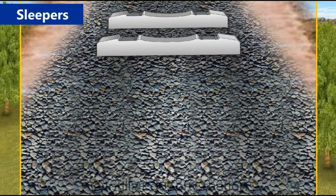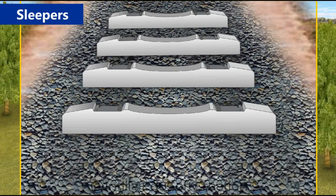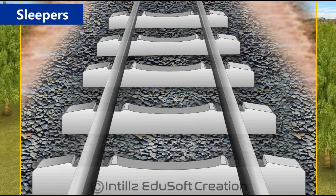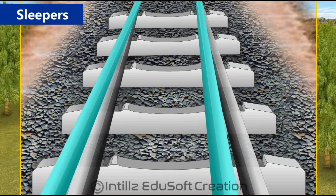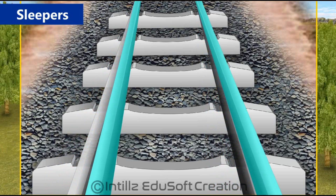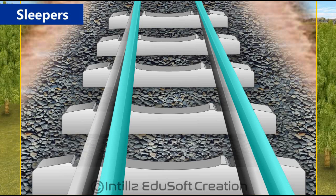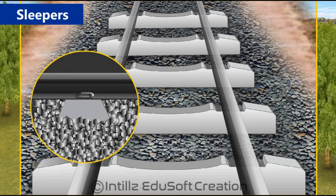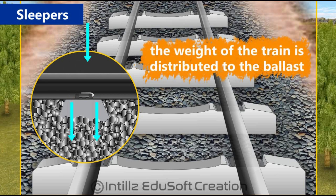The concrete sleepers, because of their heavy weight, provide sturdiness to the railway track. The PSC sleepers do not allow the track to have lateral and horizontal movement. As the PSC sleepers are laid on the ballast, the weight of the train is distributed to the ballast.